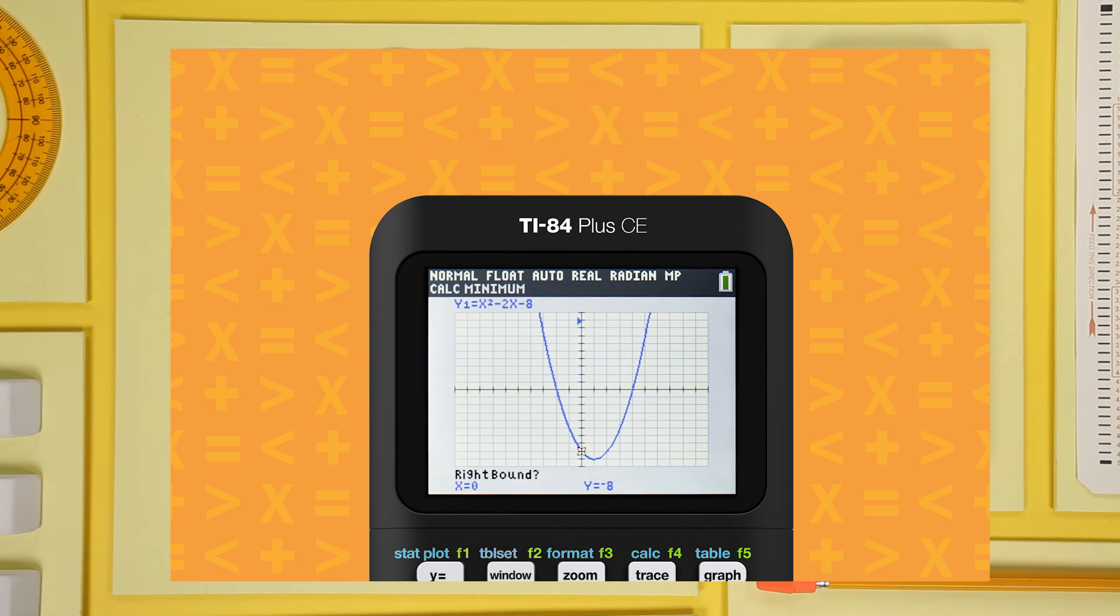And for the right, try 2. See those arrows? They point to the left and right boundary values you just set.